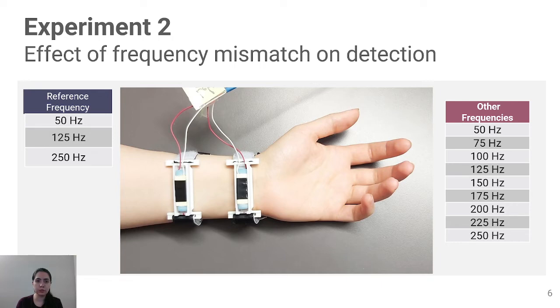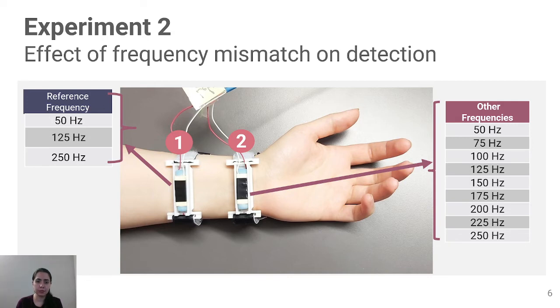We asked 10 participants to detect the direction of apparent tactile motion when the first vibration was at one of the reference frequencies and the second was at one of the other frequencies. We had five iterations for each combination.